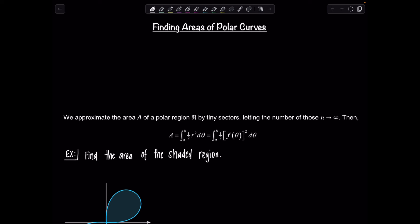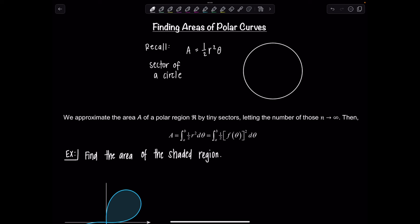The first thing you need to recall is the formula for the area of a sector of a circle: A equals one-half R squared theta. The radius is given by R, and theta is the angle being swept out by the sector. So if you want the area of this slice or sector, you take one-half times the radius squared times theta.